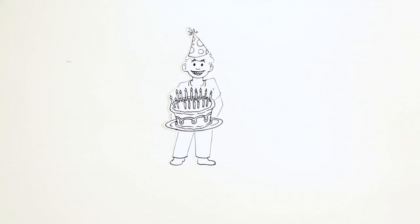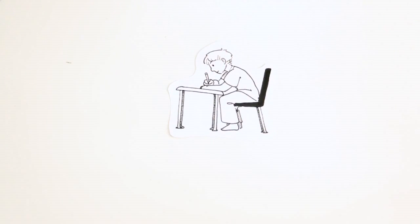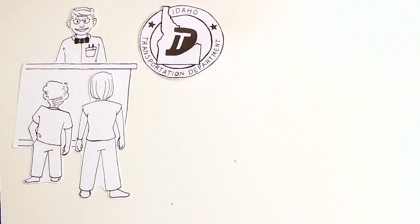Daniel turned 14 and a half yesterday. In Idaho, this means he's just old enough to apply for his driver training instruction permit. And since he's under 17, Daniel needs to attend driver training before he gets his license. He'll need to get his driver training instructor permit before he can start attending driver training. To do this, he and his mom head down to the local DMV.